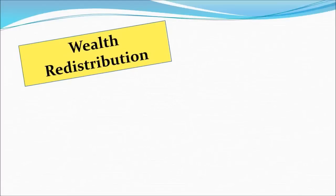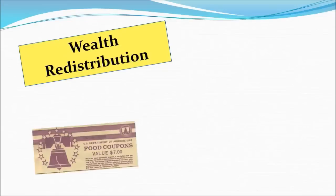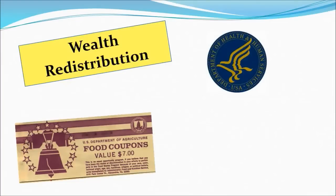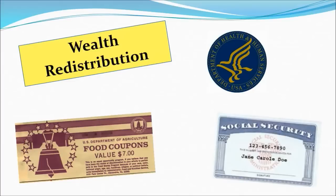The last reason is usually the most controversial, and that's wealth redistribution — moving money from one person to another, or in some cases, from one time period of a person's life to another. Examples include food stamps, health and welfare programs like WIC (Women and Infant Children) in California, and Social Security, which transfers wealth from one point of your life to another. In all these instances, the government collects money and redistributes it in some fashion.